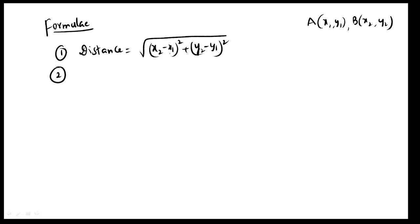Note: the formula can also be written as x1 minus x2 whole square plus y1 minus y2 whole square — the order is reversed. A negative value is squared and then becomes positive, so the formula result is the same either way.